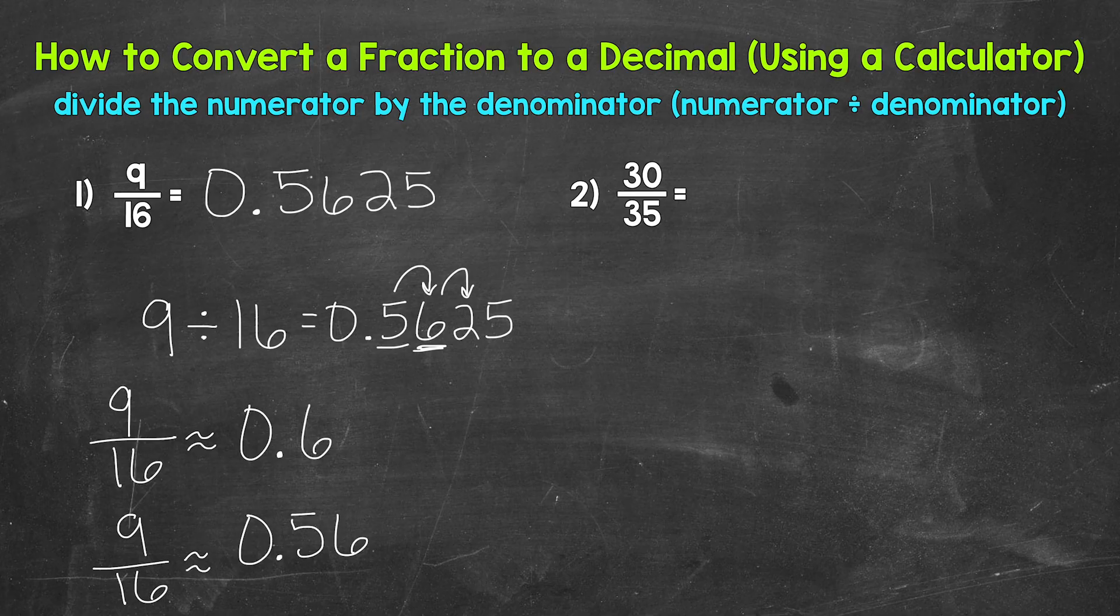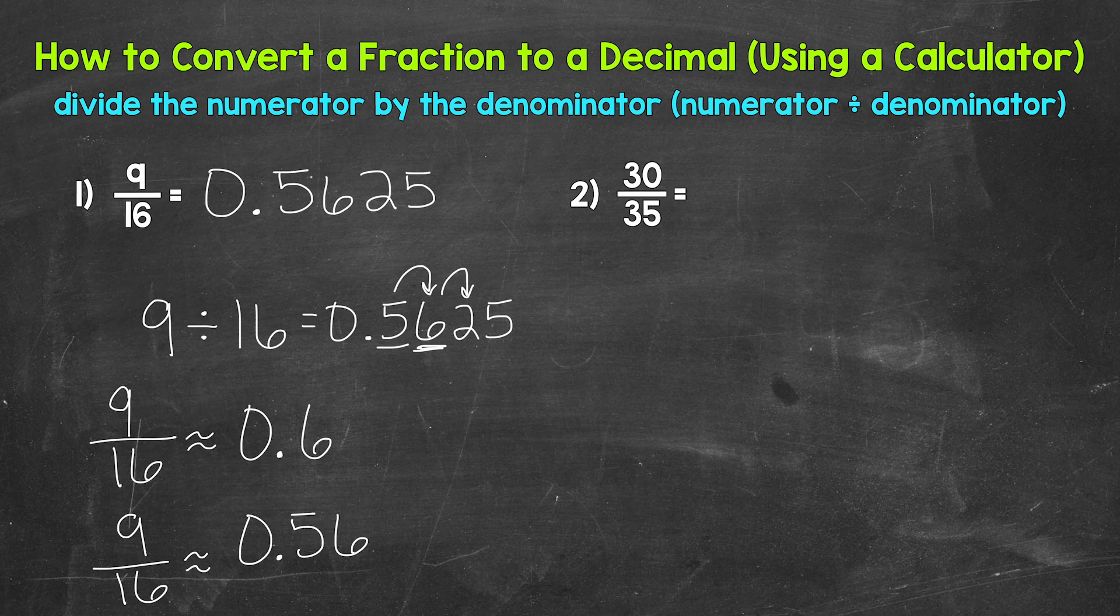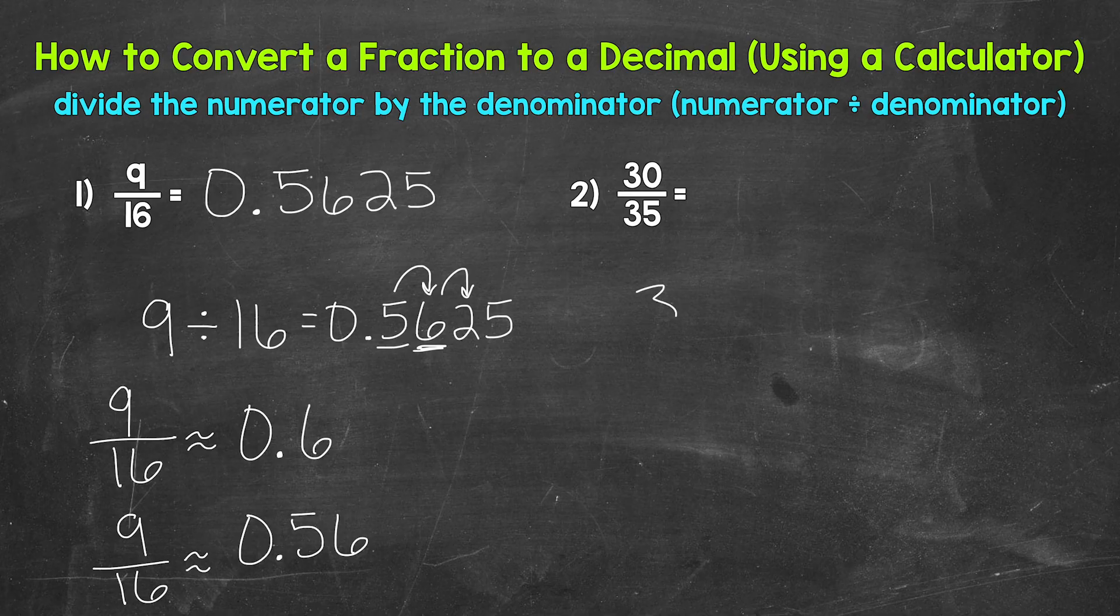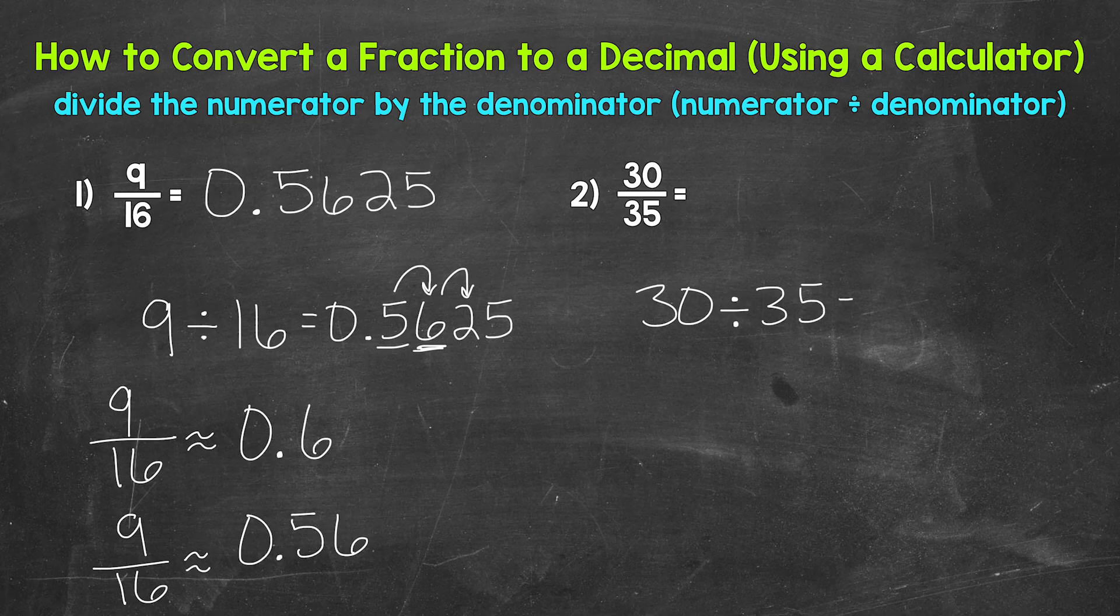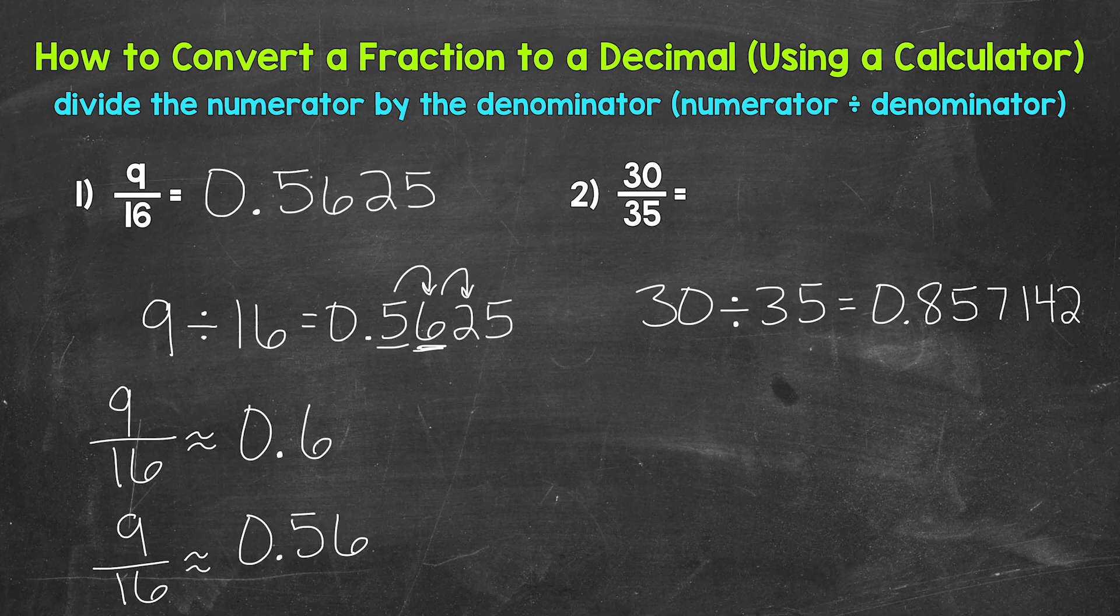Let's move on to number two, where we have 30 over 35, 30 thirty-fifths. So we need to divide the numerator by the denominator. So plug in 30 divided by 35. That gives us 0.857142. Those six digits repeat and go on forever in that pattern.